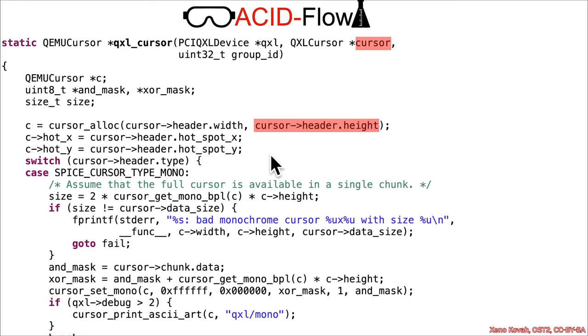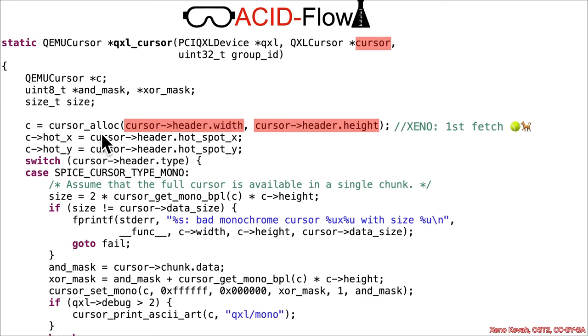Cursor is attacker-controlled (acid), acid height is acid, acid width is acid — these call into something called cursor_alloc. This is going to be the first fetch from this shared memory region.